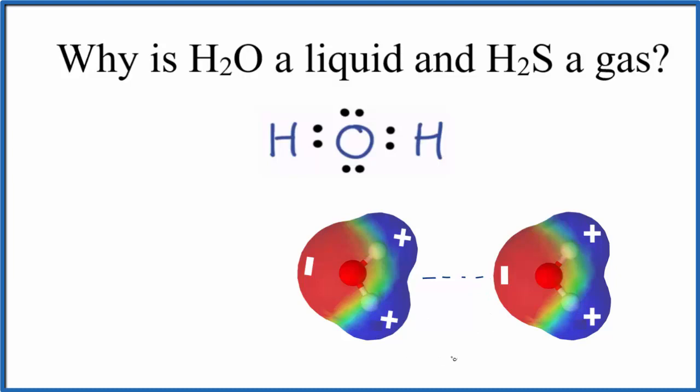So if you have a bunch of water molecules, they're going to be weakly bonded together. That means they're closer. That means they're going to be a liquid. H2S, it doesn't have hydrogen bonding, so it remains a gas.